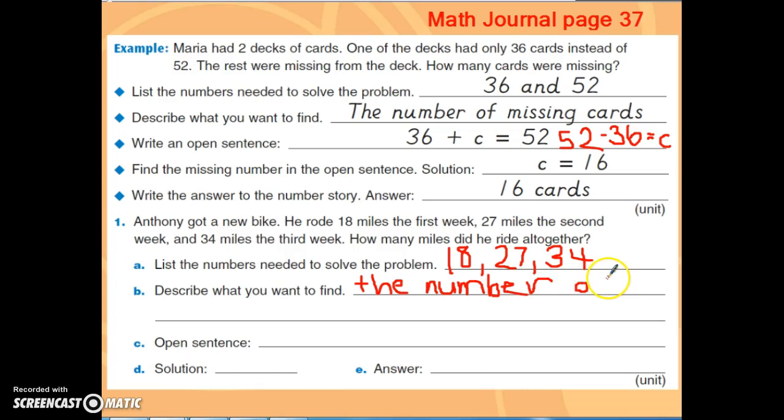Then we're going to go down to our open number sentence. Remember, your open number sentence is going to use a variable. We could use any variable you want to. Any lowercase letter would be fine. And so the open number sentence, since we're finding miles, we could do M. So we know that we need to add here. We need to find all together. There's kind of our key word. So we could do 18 plus 27 plus 34 equals M. And M, again, I chose M just because we're looking for miles, and miles starts with M. But you can use any letter that you would like.